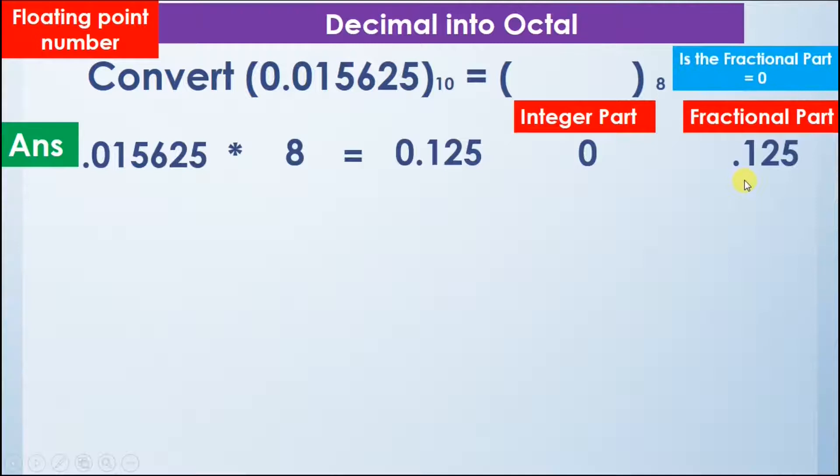So is the fractional part equal to 0? No, the fractional part is not equal to 0. So we will take the fractional part and multiply it with 8 again. So we get the answer 1.000 or you can say 1. So now the integer part is 1 and the fractional part is equal to 0.0 or you can say 0.